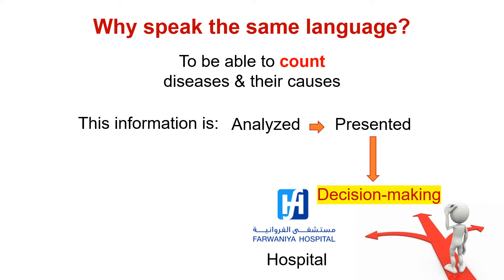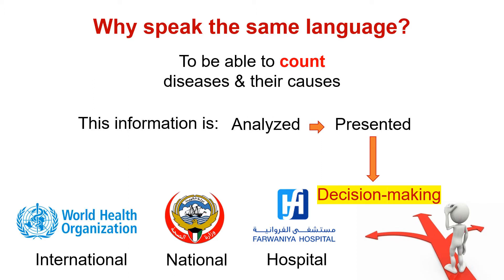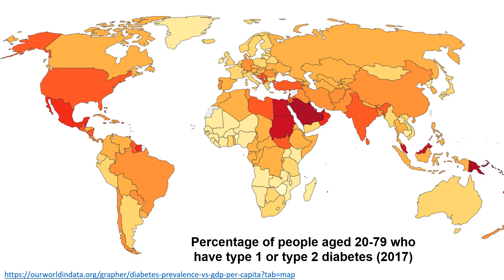It helps with research. At the national level, it helps us set health policies and resource allocation. It is also used internationally. Take a look at this map — it shows the percentage of people aged 20 to 79 who have type 1 or type 2 diabetes. Unless we all use a standard way for coding diagnoses all over the world, we would never be able to have this map.